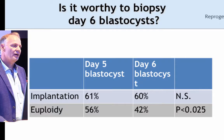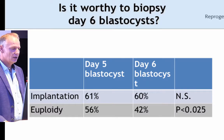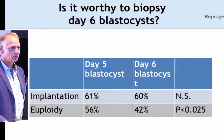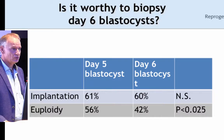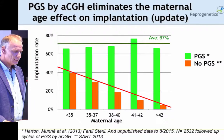If you compare Day 5 embryos to Day 6 embryos, it seems that Day 5 embryos have more euploidy than Day 6 embryos. But once you transfer them, if they are normal, they implant equally well. Obviously, you have to transfer them on a frozen cycle, otherwise these embryos do much, much worse because they have a high chance of losing the window of implantation.